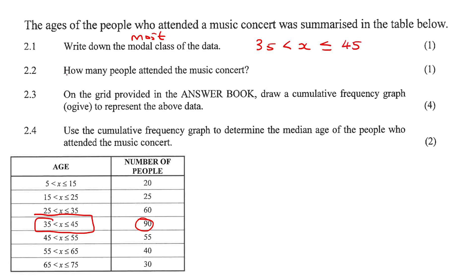Now how many people attended the music concert? Well think about it, there's 20 people there, 25 people there, 60 there, and you just add all of these numbers together. So 20 plus 25 plus 60 plus 90 plus 55 plus 40 plus 30, just add all of that together and there's 320 people.